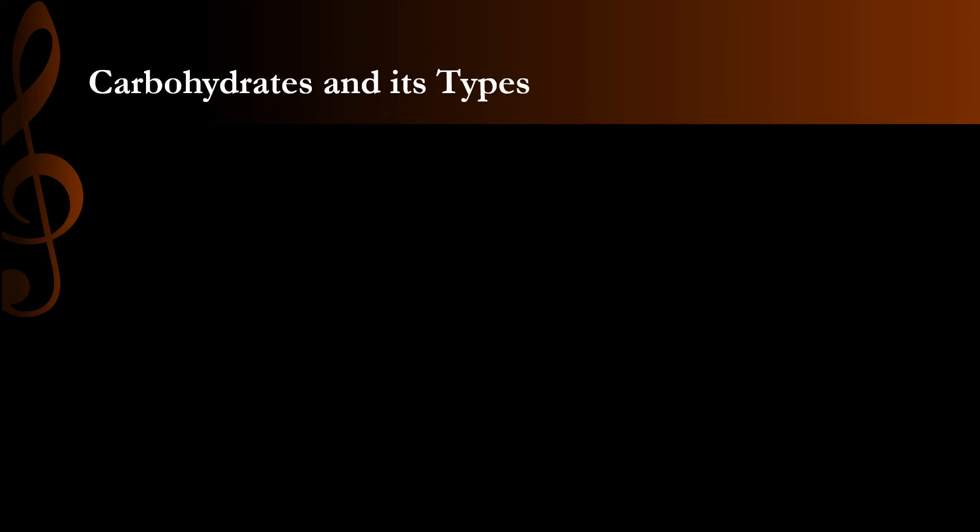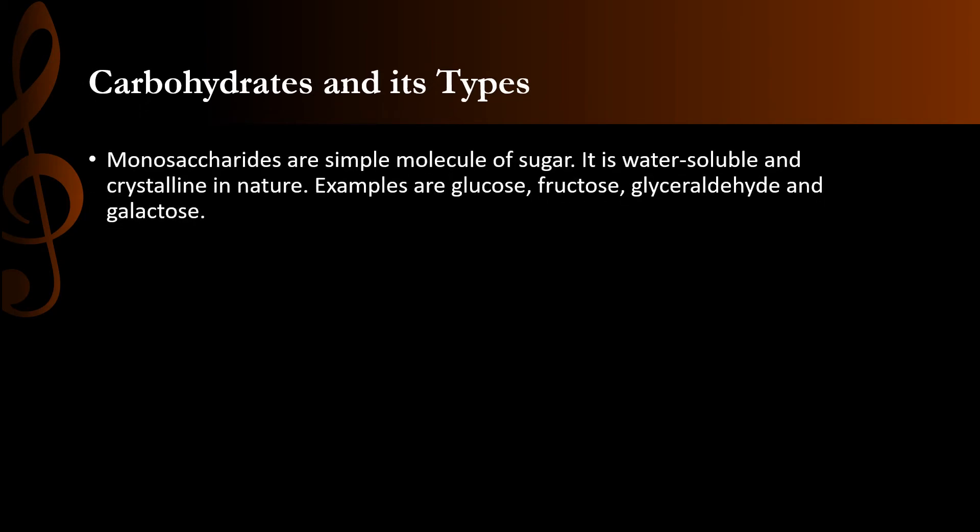Carbohydrates and their types. Monosaccharides are simple molecules of sugar. They are water soluble and crystalline in nature. Examples are glucose, fructose, glyceraldehyde, and galactose. Monosaccharides are a single molecule of sugar — mono means single, saccharide means sugar.